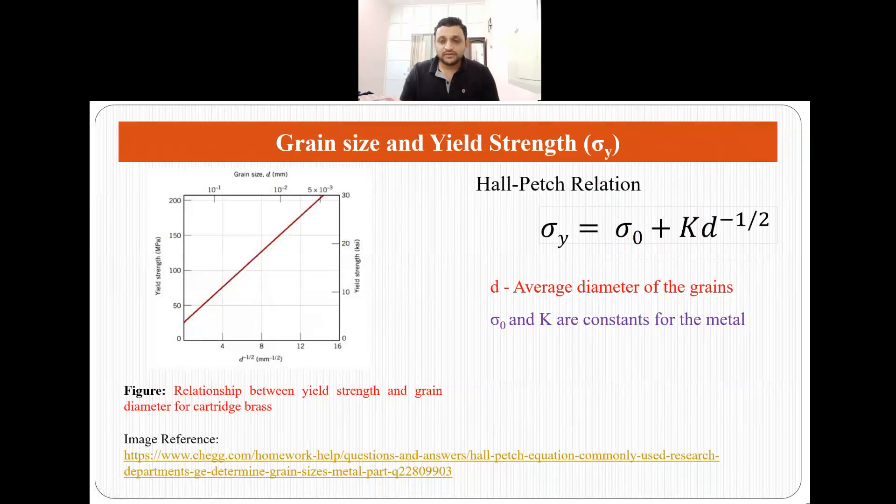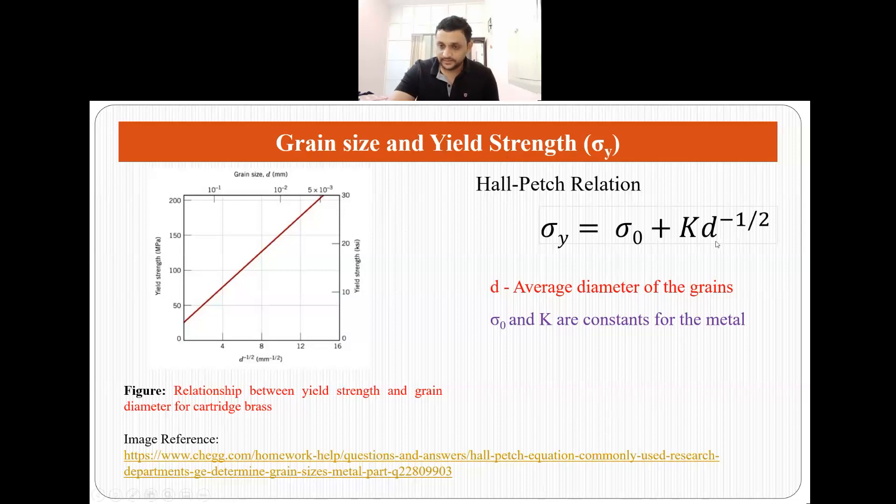Now let's talk about how the grain size affects the properties of the material, especially the yield strength. Yield strength is the point where stress is no longer proportional to strain or where the plastic deformation begins to happen. Now there is a relation between yield strength sigma y and grain size d which is given by Hall-Petch relation. Sigma y equals to sigma naught plus Kd minus half, that is sigma y is inversely proportional to grain size.